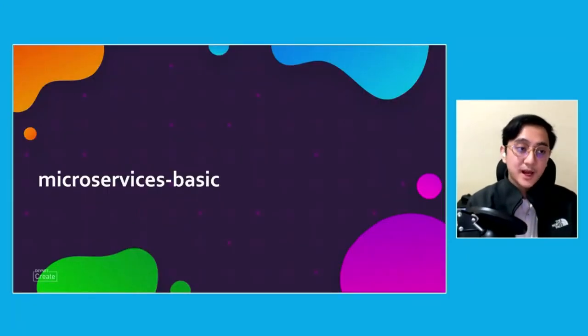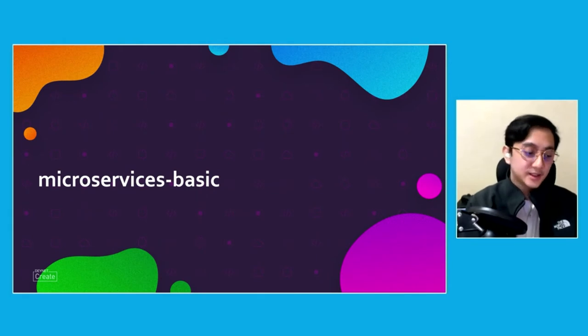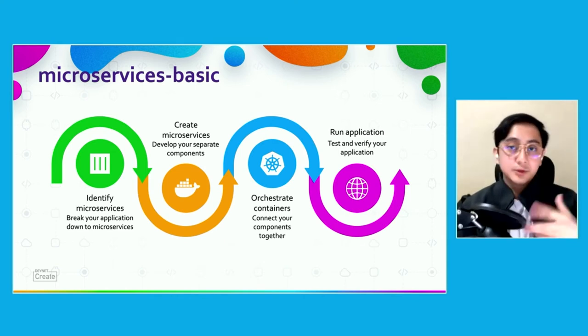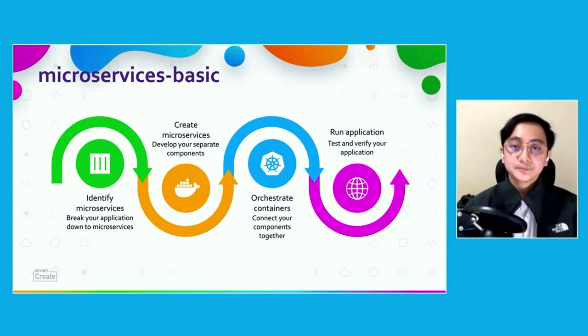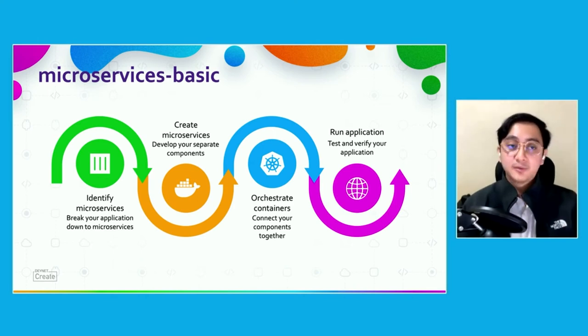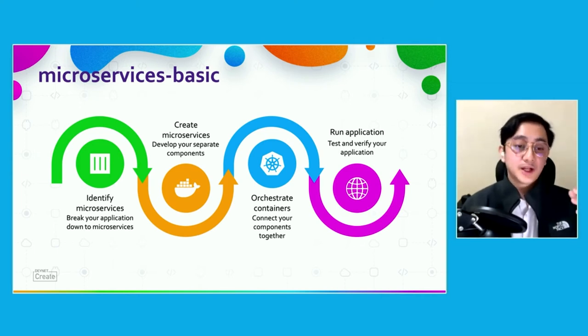Now we'll do a small demonstration of how to use Kubernetes in a simple microservice environment. We created this demonstration in four main steps. The first step is identifying the microservices — breaking your application into different microservices. In this case we have a backend and a frontend, two basic microservices. The second step is creating the microservices — developing those components. I've created two Flask Python applications, one acting as a backend that the frontend retrieves information from, and a frontend that displays that information in a website.